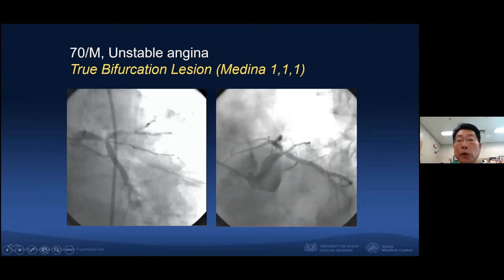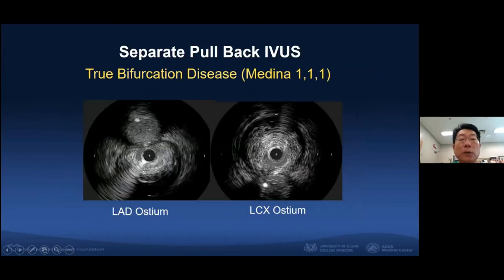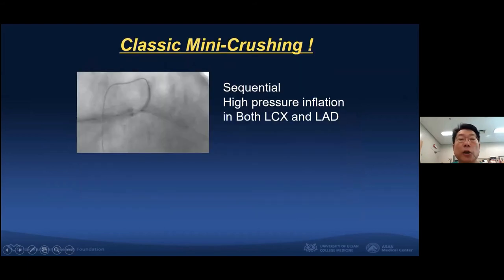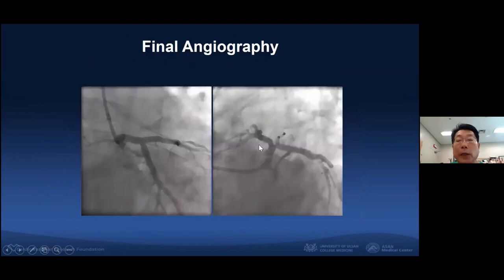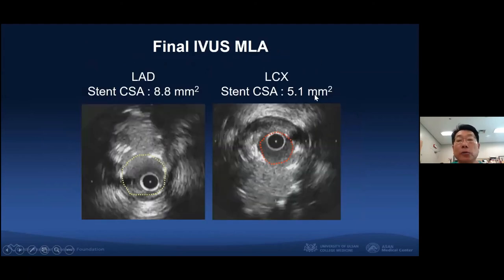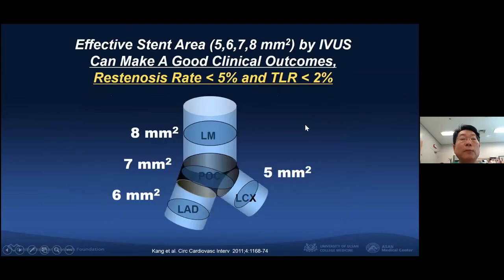For a 70-year-old male patient with true bifurcation, Medina class 1,1,1 — IVUS findings showed plaque and disease at both the LAD ostium and circumflex ostium. So we performed classic mini-crush: two-stent on the circumflex and LAD sequentially with high pressure, and finally kissing balloon inflation at moderate pressure. We achieved very good angiographic results. Final IVUS showed circumflex minimal stent area of 5.1 mm² and LAD 8.8 mm² — effective stent areas of 5, 6, 7, 8 mm² by IVUS can yield good clinical outcomes.